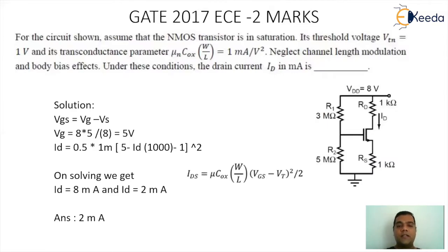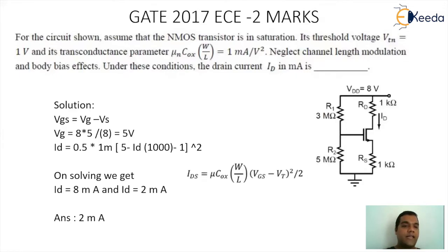Substituting into the equation for ID, we get: ID = 0.5 × 1mA × (5 − ID×1000 − 1)². Solving this gives two values of ID: 8 mA and 2 mA. We always take the lower value, so ID = 2 mA. The correct answer is ID = 2 milliampere.